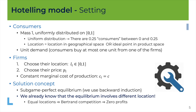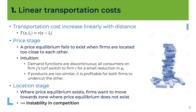We will analyze this game by making two different assumptions regarding the transportation costs — this function T(X, L_i). In the first interpretation we assume the cost is linear: τ times the absolute value of the difference between X and L_i, so that's the distance between the location of the consumer and the location of the shop. In geographical terms, any step you walk in the street costs you exactly the same, and the larger the distance, you multiply the number of steps by a constant cost τ.